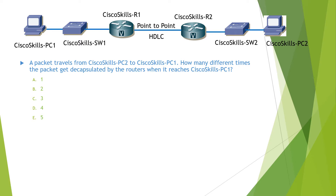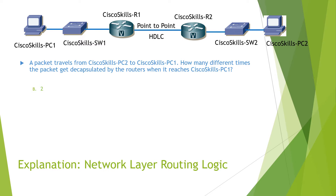The simple rule is that the packet gets de-encapsulated when it goes from the wire into the router. So we can count — this is one time and this is two times — so the answer is 2. You can find the detailed explanation in the video Network Layer Routing Logics.